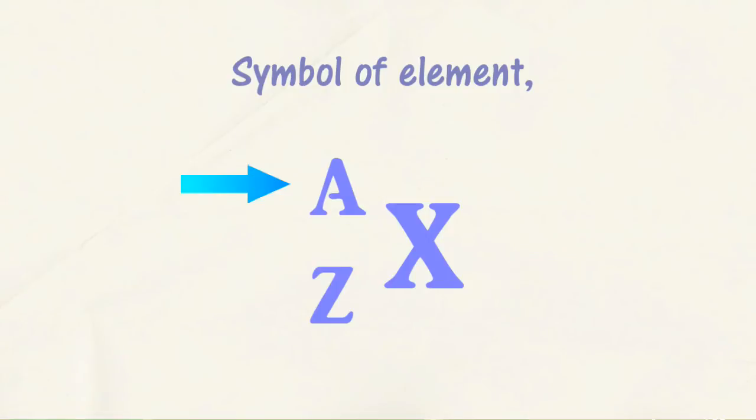The number in the top left, A, represents the nucleon number. The nucleon number is the total number of protons and neutrons in the nucleus of an atom. The number in the bottom left, Z, represents the proton number. The proton number is the number of protons in the atom nucleus of an element.